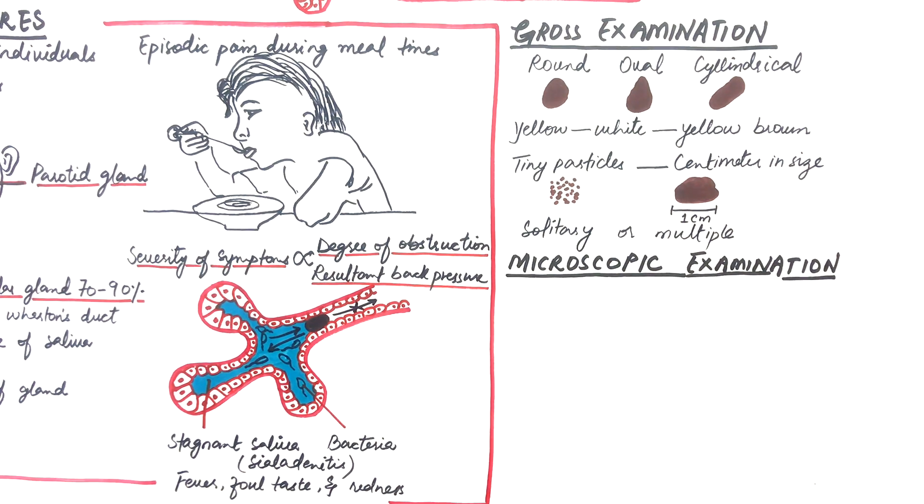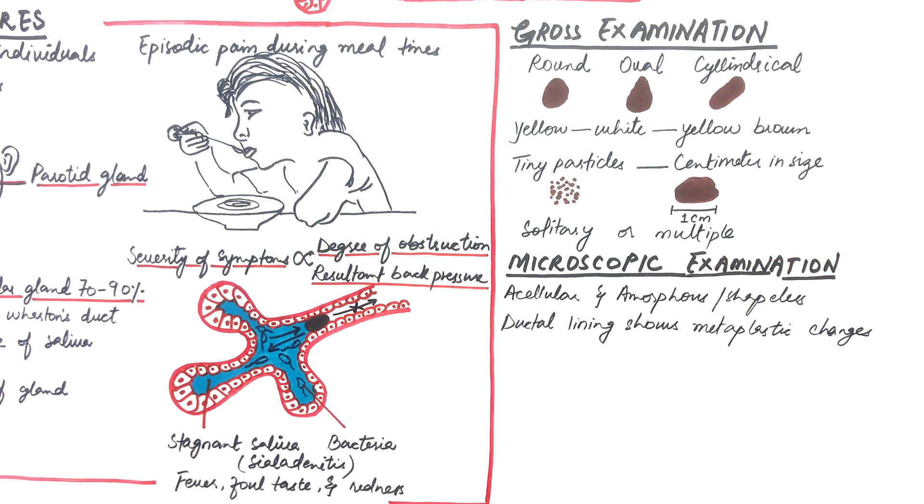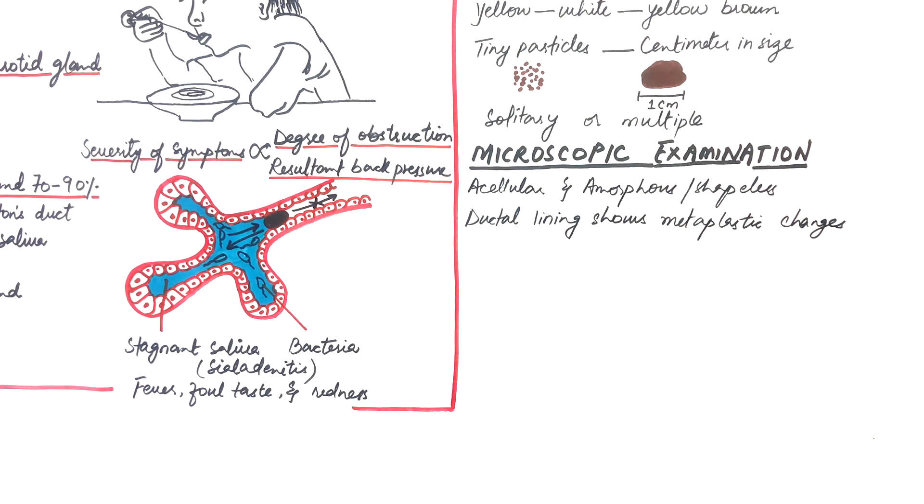Microscopically, the stones are acellular and amorphous or shapeless. The ductal lining which surrounds the stone often demonstrates metaplastic changes.